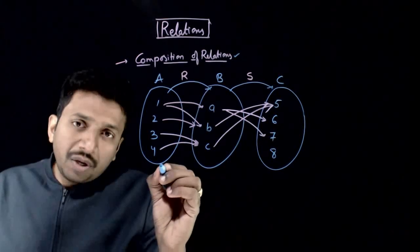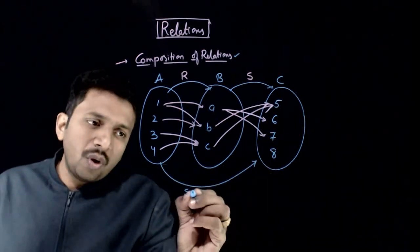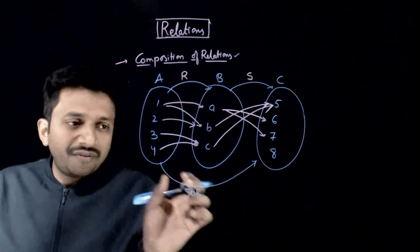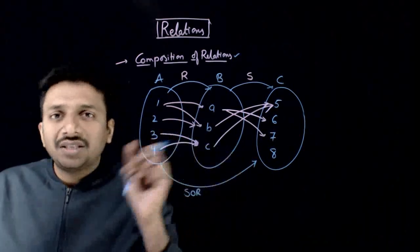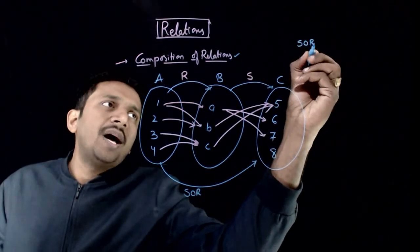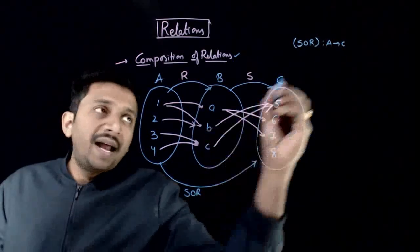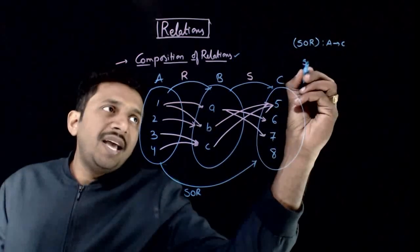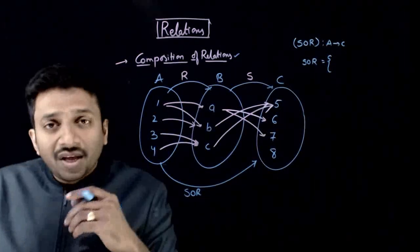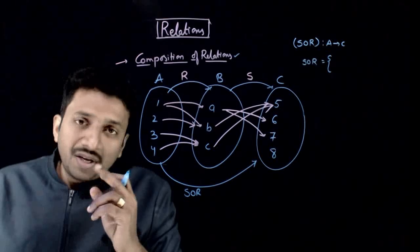You can define a relation SOR from A to C. If SOR is a composite relation from A to C, what are the ordered pairs that SOR contains?